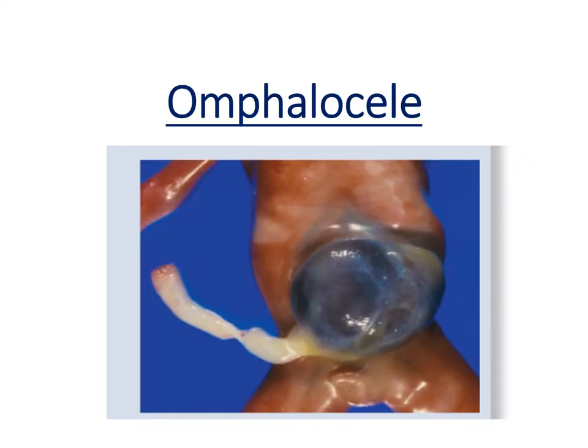Omphalocele is different from gastroschisis in that omphalocele is covered by amnion, as you can see here. Omphalocele does not primarily occur due to the failure of the body wall to close, but rather due to failure of the return of the gut tube back into the abdominal cavity. The gut tube herniates at week 6 and returns at week 10, so failure of this return results in omphalocele.